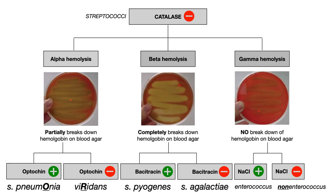If it does grow in 6.5% NaCl, then it's enterococcus — that's what we'll talk about in today's video. If it does not grow in 6.5% NaCl, then it's non-enterococcus, which will be the next video. This is easy to remember: non-enterococcus does not grow in salt, while enterococcus does. The one with 'non' in the name does non-grow in 6.5% salt.